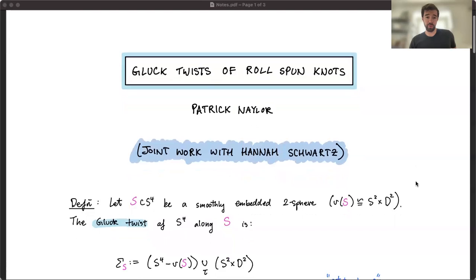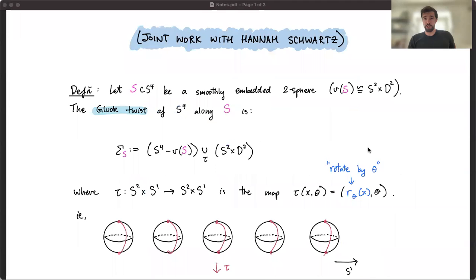All right, so first up, what is a Gluck Twist? A Gluck Twist is something that you do to a 4-manifold, which in this case is always going to be the 4-sphere. If you have a smoothly embedded 2-sphere in the 4-sphere, then a tubular neighborhood is always diffeomorphic to S² × D², and so you can cut it out and re-glue it by an automorphism of the boundary, which in this case is S² × S¹.